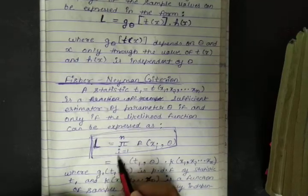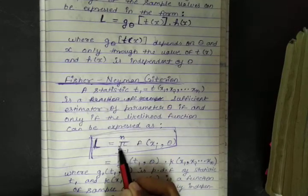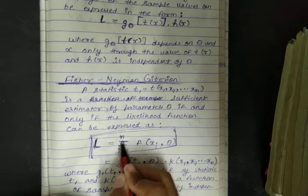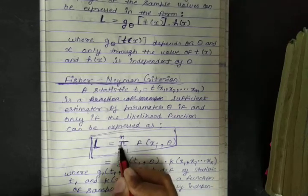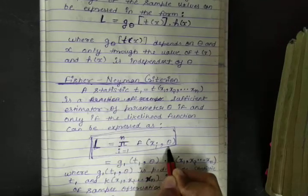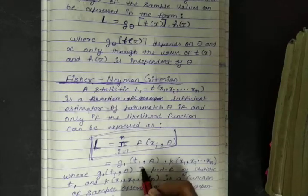Likelihood function L is equal to product i is equal to 1 to n of f(x_i, θ) and it can be further written as...